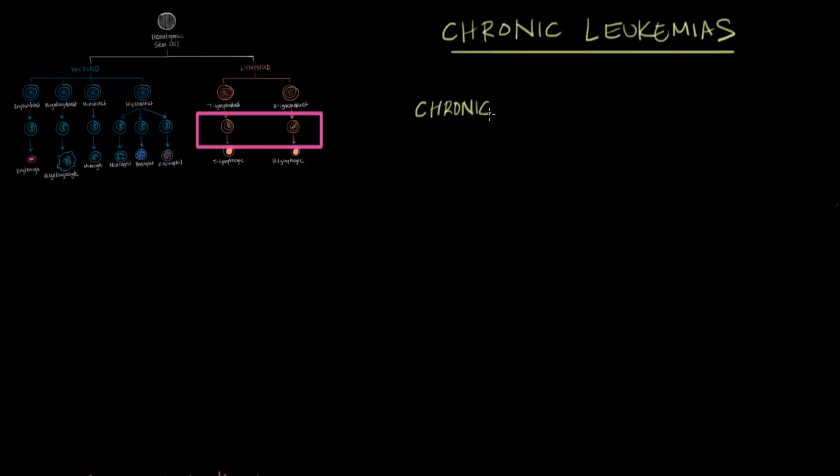And we're actually going to start off by talking about the chronic lymphoid leukemias. We're going to start with chronic lymphoid leukemia, which is usually just abbreviated CLL. So even though the name doesn't tell you this, CLL is a B cell leukemia. So CLL develops from this cell over here. I'm just going to circle that.